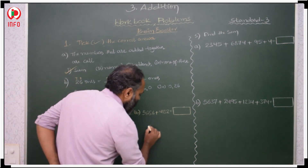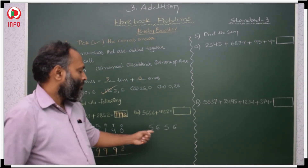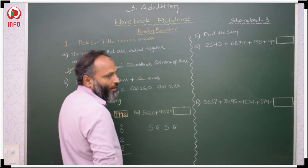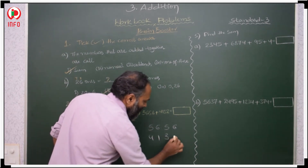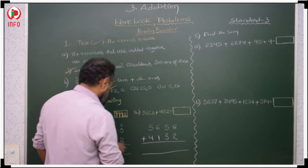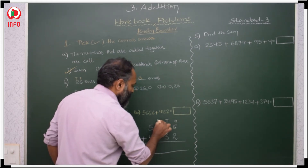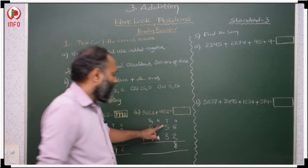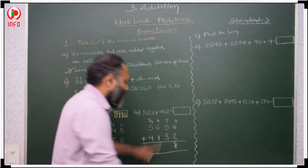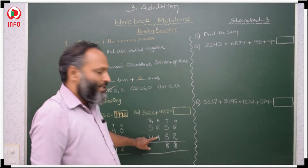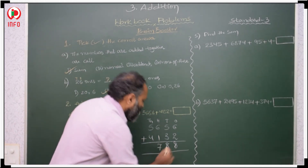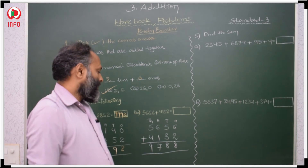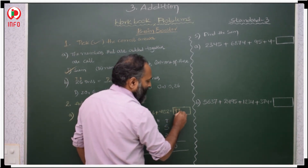Next brain booster: 5,656 plus 4,132. 1's place, 10's, 100's, 1000's. 6 plus 2 is 8 — no need to regroup. 5 plus 3 is 8 — no need to regroup. 6 plus 1 is 7 — no need to regroup. 5 plus 4 is 9 — no need to regroup. Answer: 9,788.